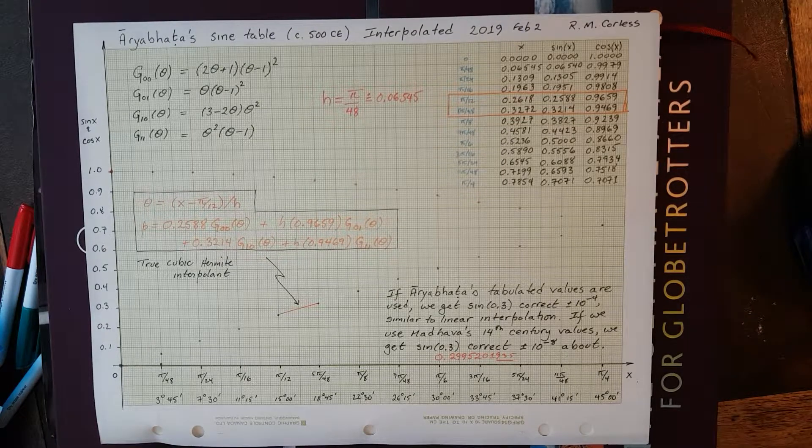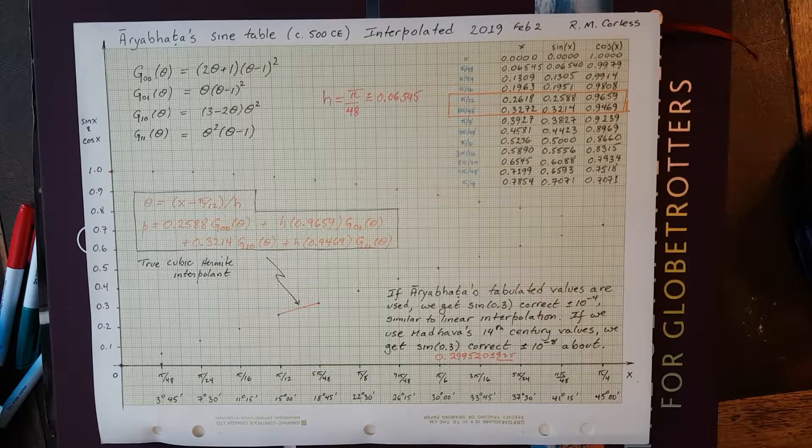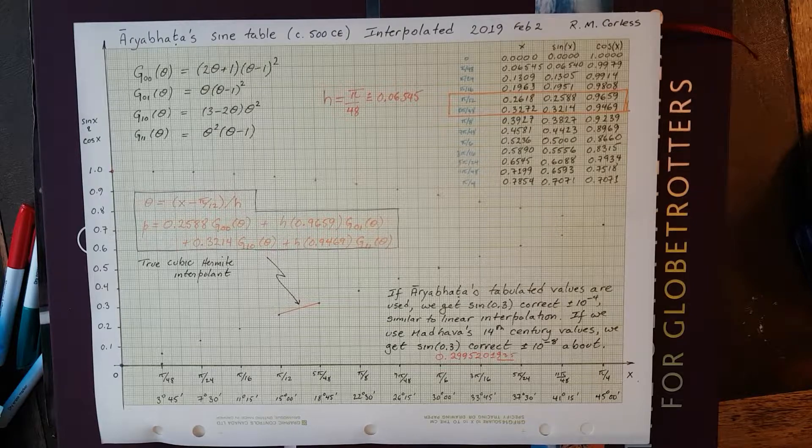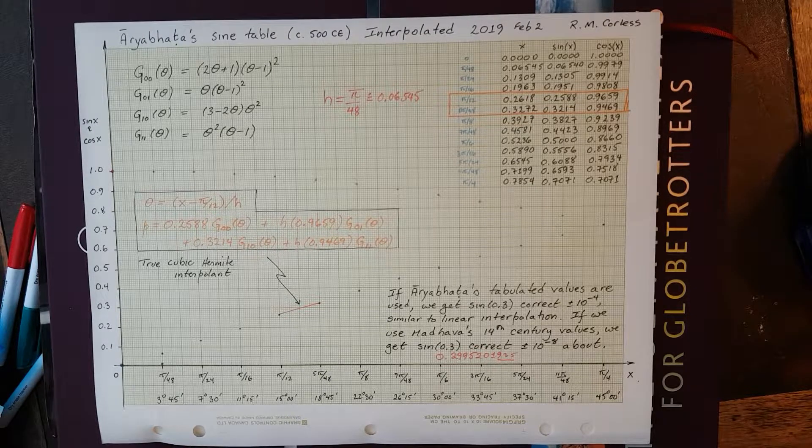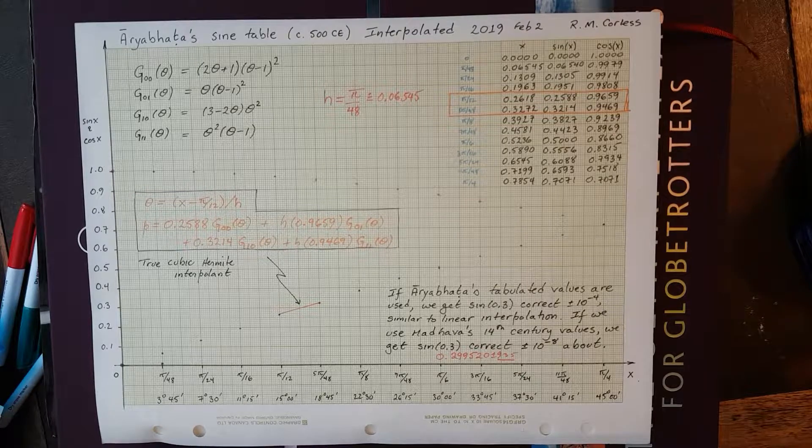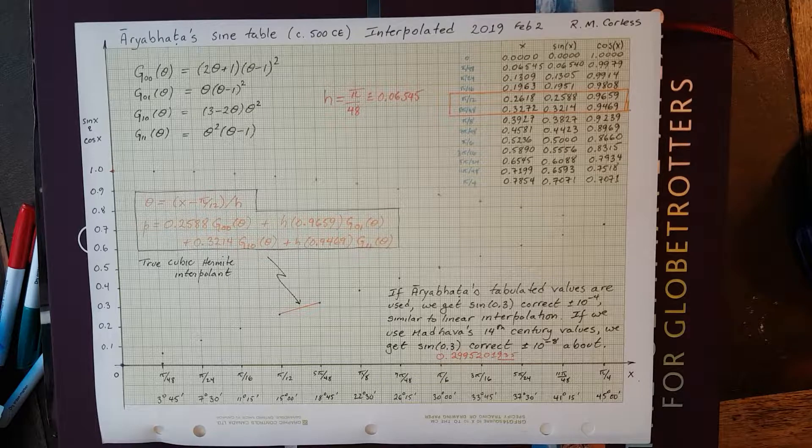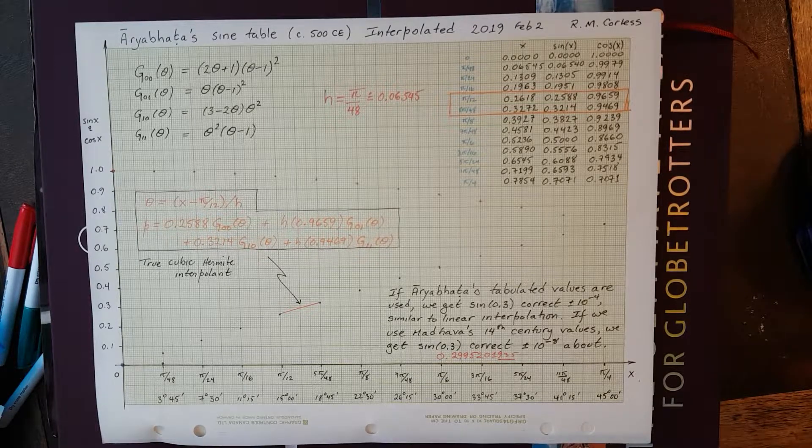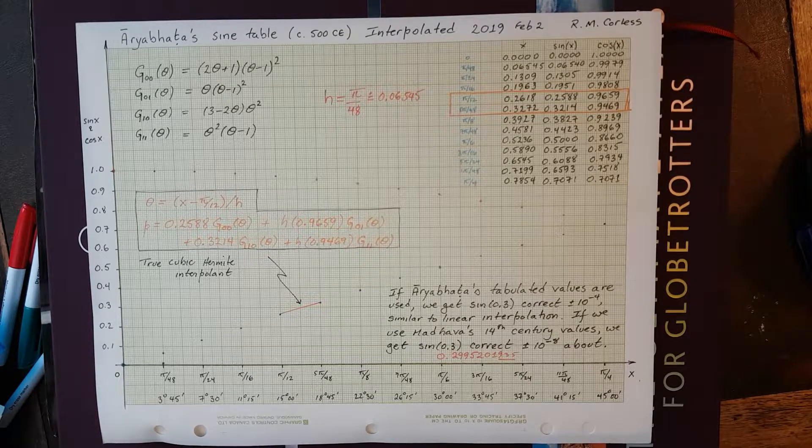One of the things that he did was create a table of the values of the sine function, although he didn't call it that, and it was accurate to four places. If you consult the Wikipedia entry on Aryabhata's sine table, you'll find how he really did it. But I've translated it into modern terms so that we can investigate cubic Hermite interpolation as an example.